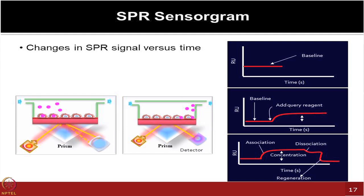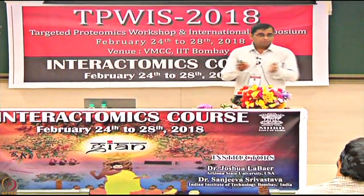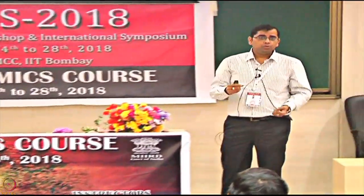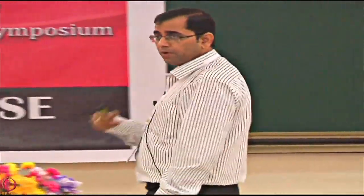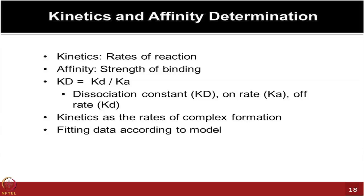Since the experiments are done on noble metals — essentially gold — which are costly, you want to regenerate and reuse the same slide. You use mild acids to strip off the bound molecules without disturbing the printed capture molecules, wash with buffer, and the same chip can be used again for the next round of interactions, reducing cost. This platform offers powerful information: you get kinetics, the rate of reaction, and can monitor on-rate and off-rate in a label-free, real-time manner.